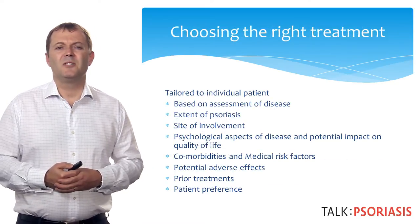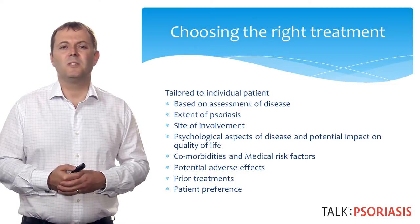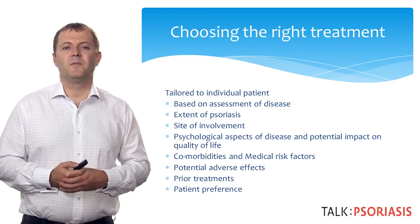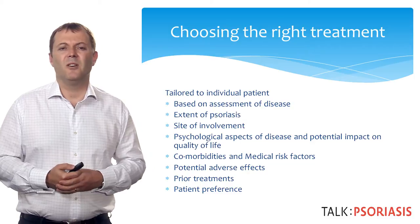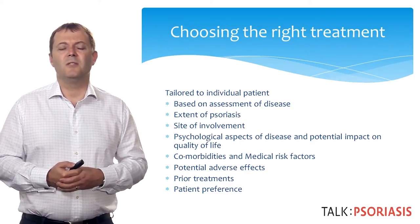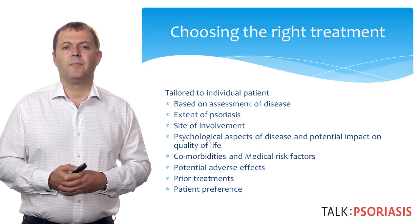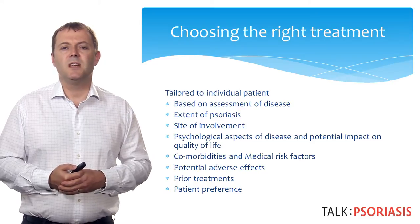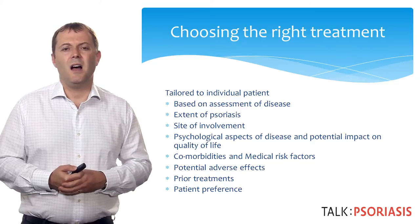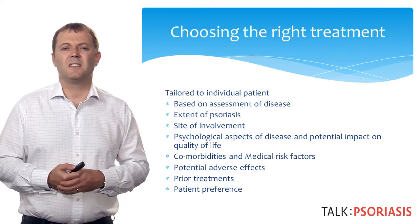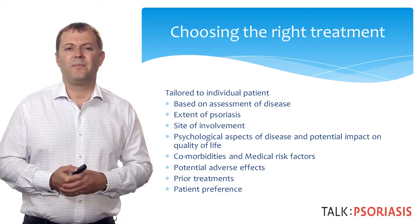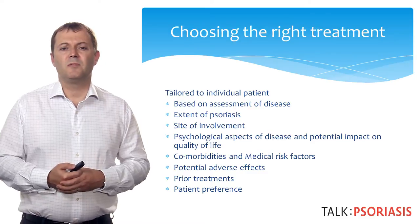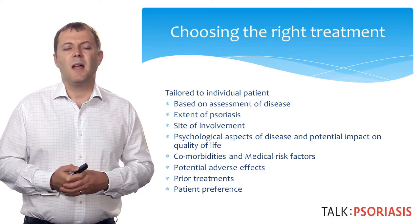Choosing the right treatment should be based on a number of factors. It's important to assess the disease correctly: what's the extent of the disease, what's the surface area involved, and where is the psoriasis — is it in the scalp, the flexures, the nails, or on most of the rest of the skin? It's very important to consider the psychological aspects and the potential impact on quality of life, ask about co-morbidities such as hypertension, discuss potential adverse effects of treatments, what the patient has had previously, and the patient's current preferences.